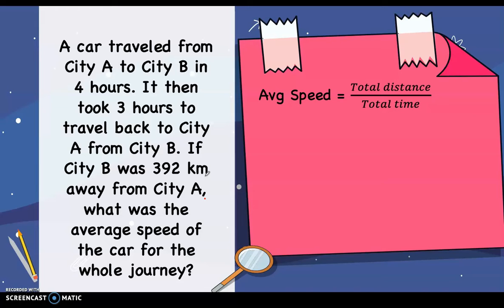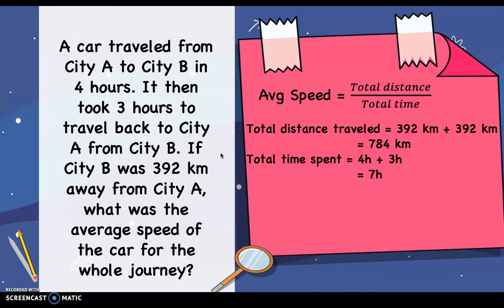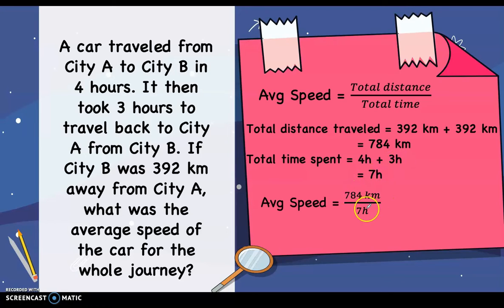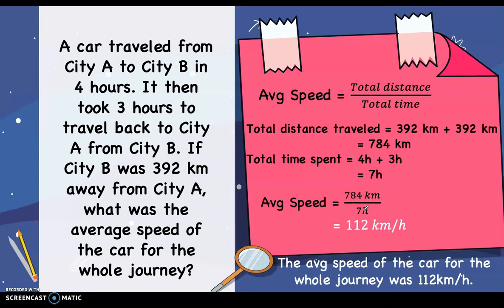We substitute the total distance and total time into the formula: average speed equals total distance divided by total time. The total distance is 392 kilometers plus 392 kilometers, or 392 times 2, which equals 784 kilometers. The total time is 4 hours plus 3 hours, which equals 7 hours. So 784 kilometers divided by 7 hours gives 112 kilometers per hour. Therefore, the average speed of the car for the whole journey was 112 kilometers per hour.